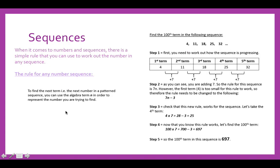Sequences. When it comes to numbers and sequences, there is a simple rule that you can use to work out the number in any sequence. The rule for any number sequence is to find the next term, i.e. the next number in a pattern sequence. You can use algebra and use the term n in order to represent the number you're trying to find. Find the hundredth term in the following sequence: 4, 11, 18, 25, 32. These are your first 5 terms of the sequence. As you can see, you're adding 7 each time. So the rule for this sequence is 7n because n is the number that you're trying to find.